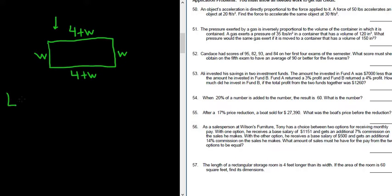So our length is equal to four plus W. That's our length. I'll go ahead and write it down. And then W is equal to our width. OK, and it says, if the area of the room is 60 square feet, find its dimensions.